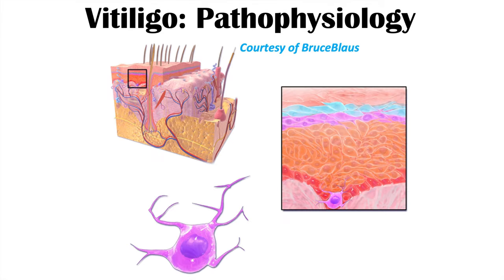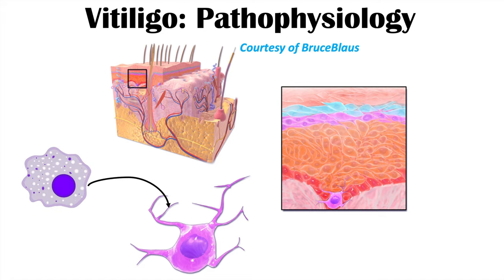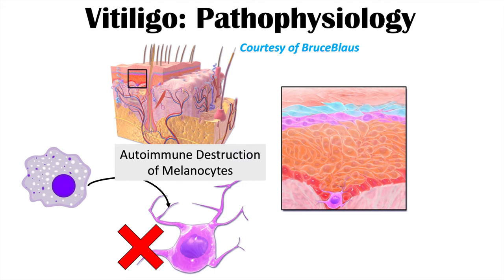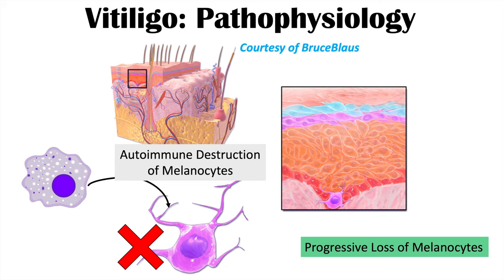In vitiligo, the skin has the epidermis, dermis, and subcutaneous layers. In the dermis, cells known as melanocytes produce the pigment melanin, which gets taken up by keratinocytes — the skin cells — giving the skin its pigment. For reasons not entirely known, immune cells become activated and destroy melanocytes through autoimmune destruction. This leads to progressive loss of melanocytes, so melanin can no longer be produced, resulting in patches of depigmented skin.